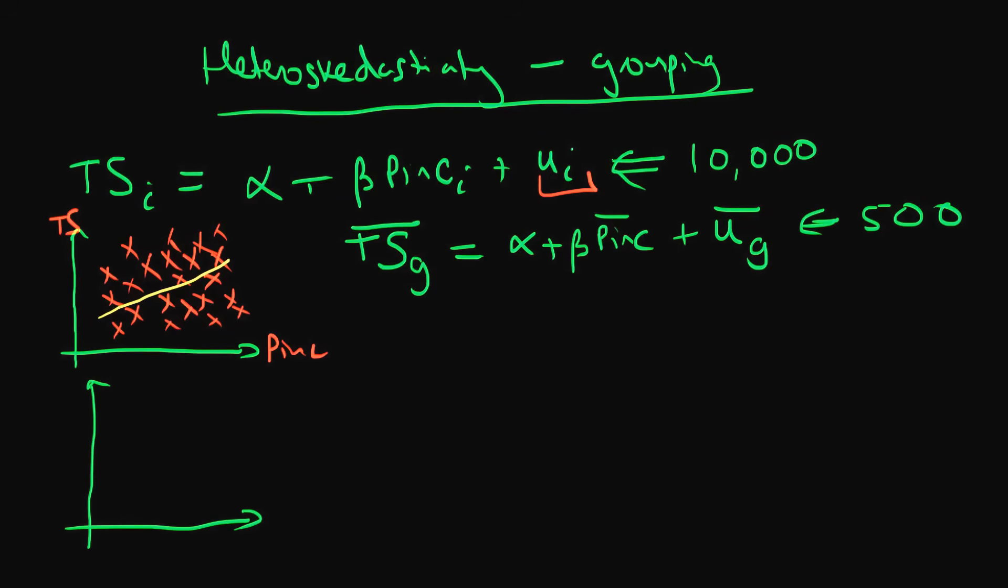So what do we expect to have changed versus the individual level data? Well, because we've averaged, we might expect that we have averaged out some of these individual sources of variation which on average has a mean of zero. So we might expect that using our aggregated level data, our model might fit the data significantly better.